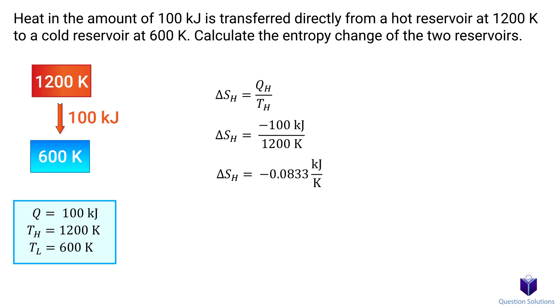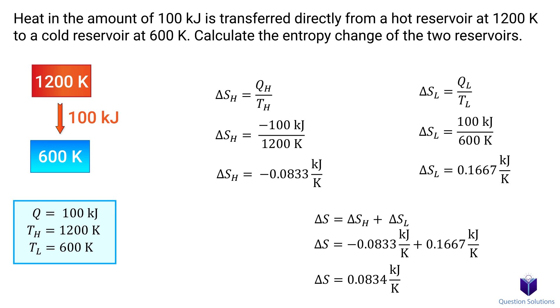For the cold reservoir, we use the same equation. This time, the cold reservoir gains 100 kJ of heat, so it's positive. Solving gives us the change in entropy for the cold reservoir. The total change is the addition of both of these values. We get a positive value, so entropy of everything increased during this process.